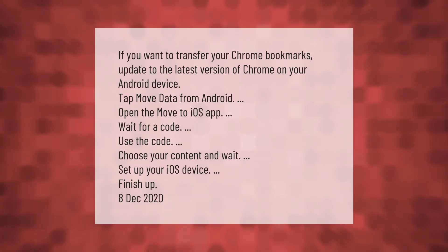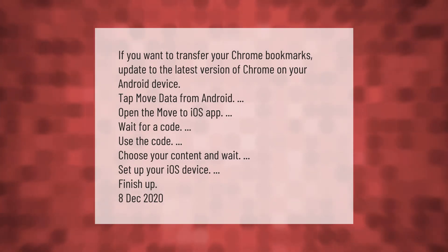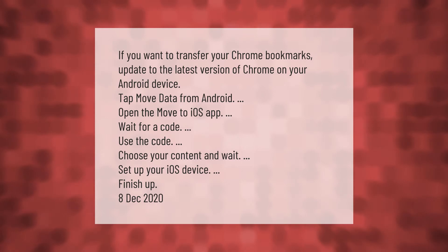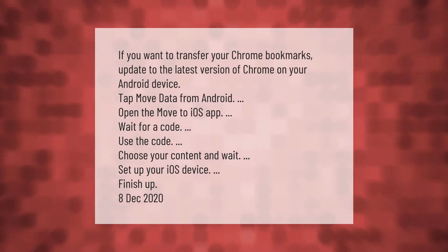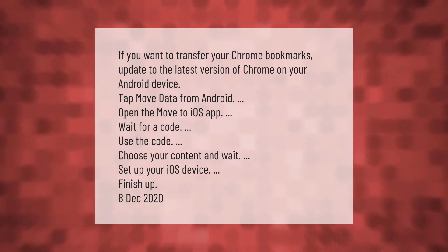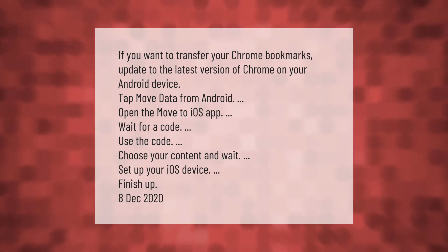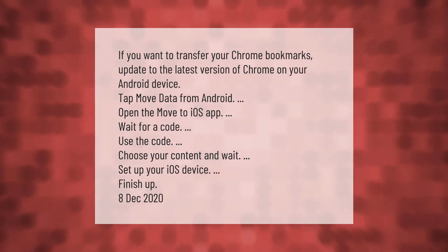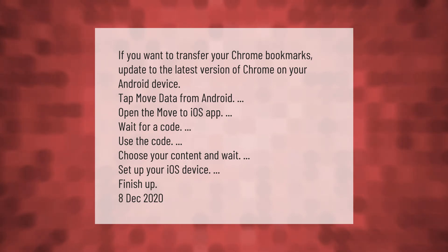If you want to transfer your Chrome bookmarks, update to the latest version of Chrome on your Android device. Tap 'Move data from Android', open the Move to iOS app, wait for a code, use the code, choose your content, and wait. Then set up your iOS device and finish up.